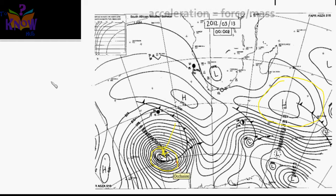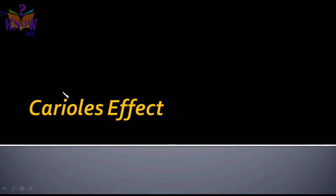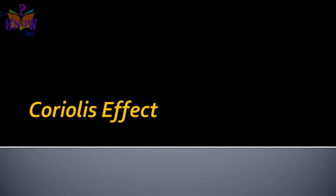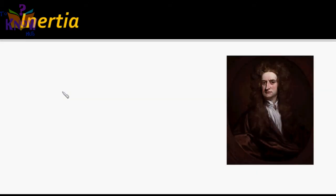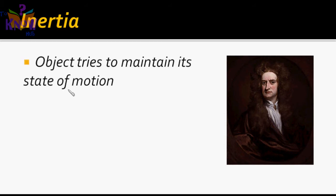This follows Newton's second law of motion: acceleration is equal to force divided by mass. Other than the pressure gradient, there is one other force affecting wind flow — that is the Coriolis force. This Coriolis force is a brain teaser for many people. To understand the Coriolis effect, you need to know Newton's laws of motion.